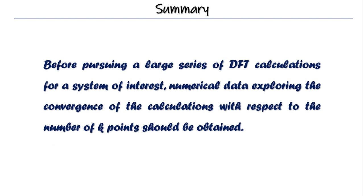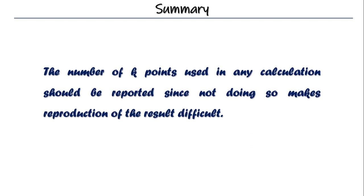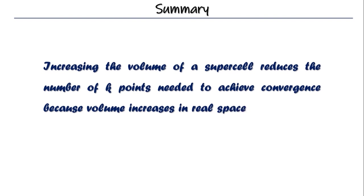Even for you, if you are doing the same calculation after 5 years, maybe you will not know how many number of k-points you have used. Okay? Third, increasing the volume of a supercell reduces the number of k-points needed to achieve convergence. Because, remember, we have talked that the density of k-points is important here. That the density of k-points is what that matters. Okay? For convergence. Now, as the volume increases in real space, that corresponds to the decreasing volume in reciprocal space. That's why increasing the volume of a supercell actually reduces the number of k-points needed to achieve convergence.